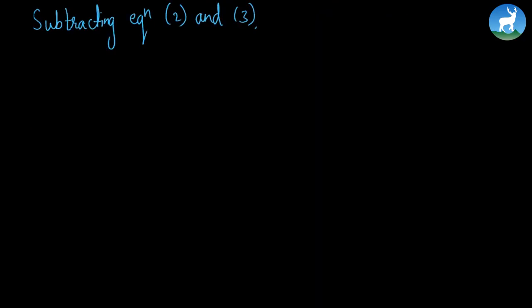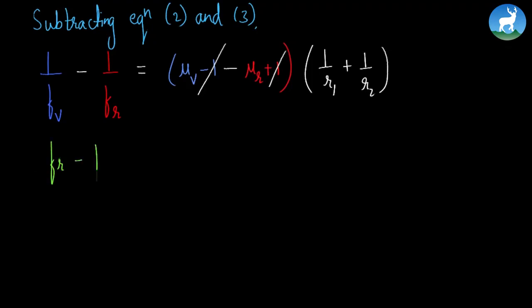Subtracting equations 2 and 3: 1/fv - 1/fr = (μv-1) - (μr-1) times (1/r1 + 1/r2). This simplifies to: (fr - fv)/(fr × fv) = (μv - μr)(1/r1 + 1/r2).